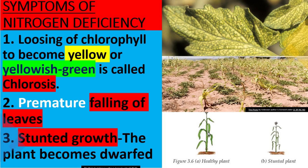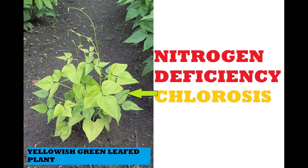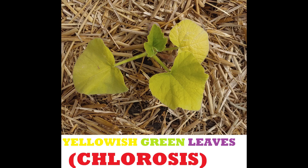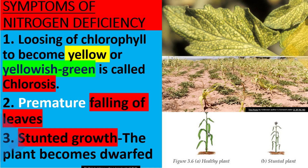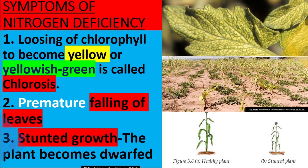The symptoms of nitrogen deficiency: a plant that lacks nitrogen does not make enough chlorophyll, thus it becomes yellow or yellowish-green, which is called chlorosis. Other symptoms include premature falling of leaves, stunted growth, and the plant becomes dwarfed.